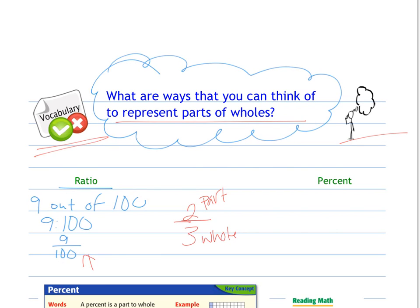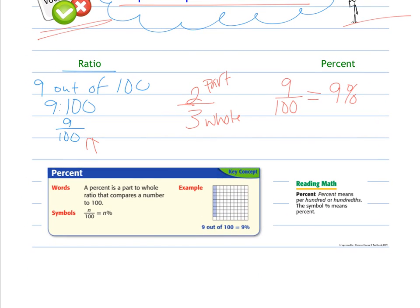So percents, then - percents are ratios that are compared to 100. A ratio that is compared to 100 can be written as a percent. For example, if I said 9 out of 100, that is the same as 9%. Because what you'll notice is that percent is read as per cent, where cent means 100. So per 100. A percent is a part of a whole, a ratio that compares to 100. Whenever you see a fraction out of 100, that's the same as that number as a percent.